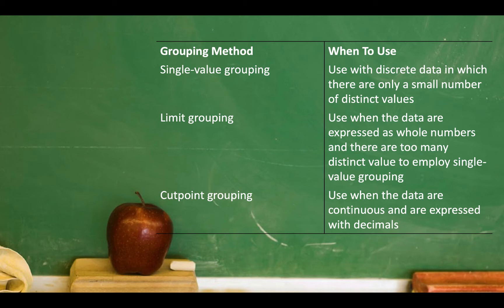Single value grouping is used when the data values are basically integer values and the range of the data values is small. Limit point grouping is also used when the data is expressed as integer values, but the range of the data is large — a wider range. And then finally, cut point grouping is used when the data set is continuous, normally represented as decimals. So let's go ahead and get started with each method.